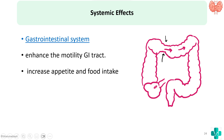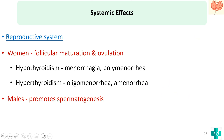On the reproductive system, in women thyroid hormone helps in follicular maturation and ovulation. In hypothyroidism women have menorrhagia or polymenorrhea, whereas in hyperthyroidism they have oligomenorrhea or amenorrhea. In males, it promotes spermatogenesis, which is why in hypothyroidism males may have impotence due to decreased spermatogenesis.